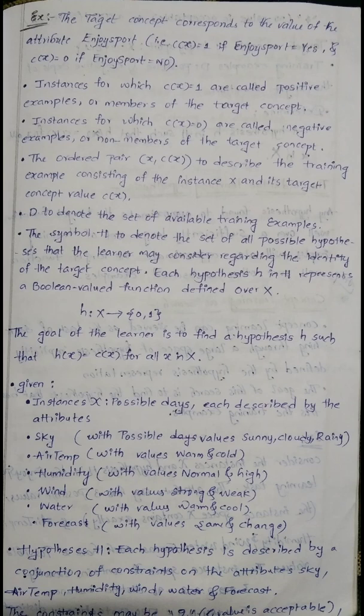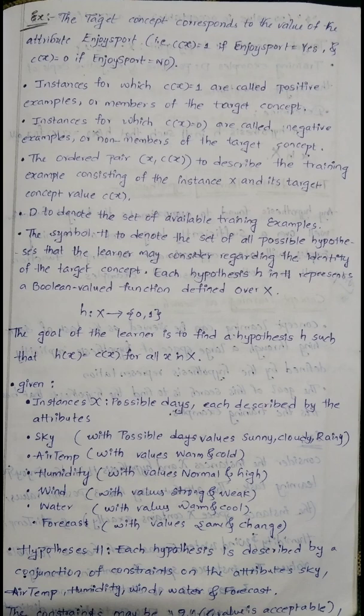The symbol H denotes the set of all possible hypotheses. Each hypothesis H in H represents a boolean-valued function defined over X — x value may be 0 or 1. These attributes are called cold, high, warm — so 0, 1, and 1 — meaning he will enjoy or won't enjoy the sport. The goal of the learner is to find hypothesis H such that h(x) = c(x).